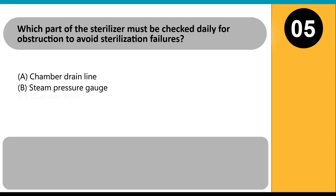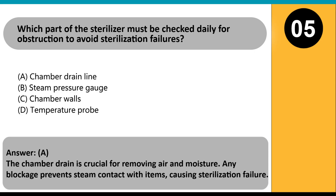Which part of the sterilizer must be checked daily for obstruction to avoid sterilization failures? A. Chamber drain line. B. Steam pressure gauge. C. Chamber walls. D. Temperature probe. Answer: A. The chamber drain is crucial for removing air and moisture. Any blockage prevents steam contact with items, causing sterilization failure.